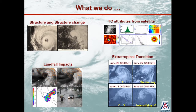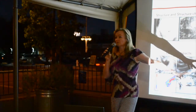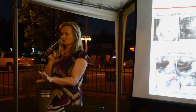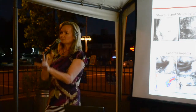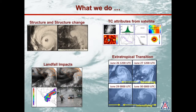We also study extratropical transition. Tropical cyclones don't spend their whole time in the tropics — a large percentage of them move up into the mid-latitudes, interact with the mid-latitude flow, and can become quite powerful hybrid storms. The movie The Perfect Storm was a weather system that was originally a tropical cyclone. It moved up into the mid-latitudes, interacted with an upper-level trough, and became a very powerful extratropical cyclone. Trying to understand how that interaction works and why the system takes the structure it does afterwards is very important.